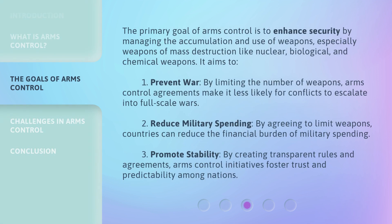The primary goal of arms control is to enhance security by managing the accumulation and use of weapons, especially weapons of mass destruction like nuclear, biological, and chemical weapons. It aims to: 1. Prevent war — by limiting the number of weapons, arms control agreements make it less likely for conflicts to escalate into full-scale wars. 2. Reduce military spending — by agreeing to limit weapons, countries can reduce the financial burden of military spending. 3. Promote stability — by creating transparent rules and agreements, arms control initiatives foster trust and predictability among nations.